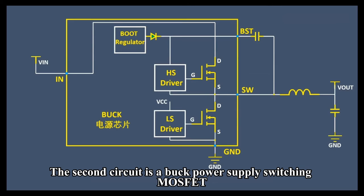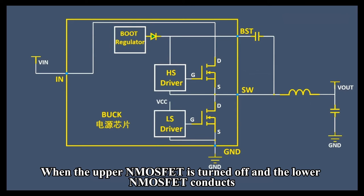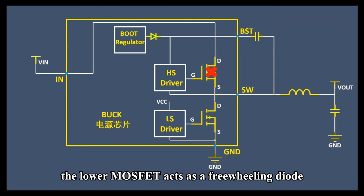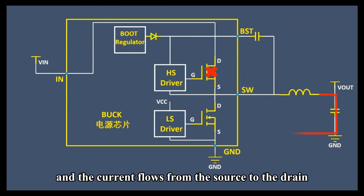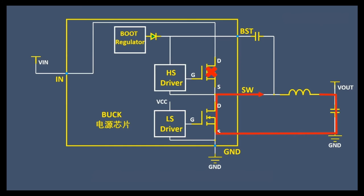This is a P-MOSFET anti-reverse connection circuit and its current direction is from the drain to the source. The second circuit is a buck power supply switching MOSFET. When the upper N-MOSFET is turned off and the lower N-MOSFET conducts, the lower MOSFET acts as a freewheeling diode and the current flows from the source to the drain.